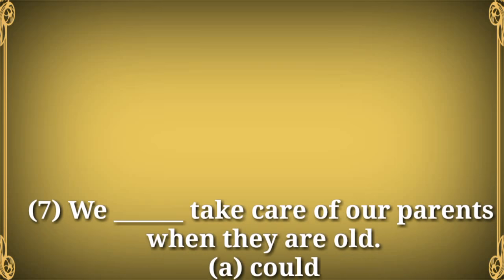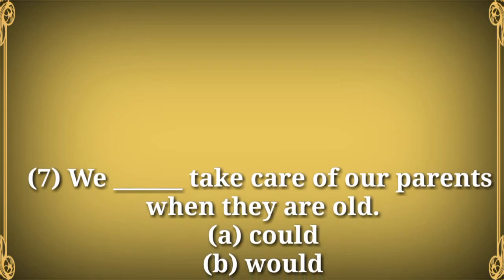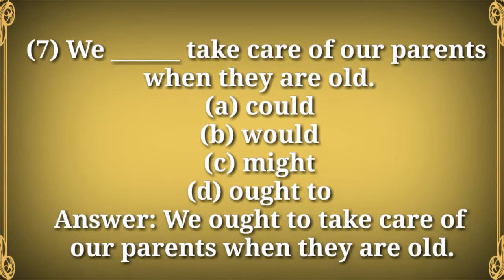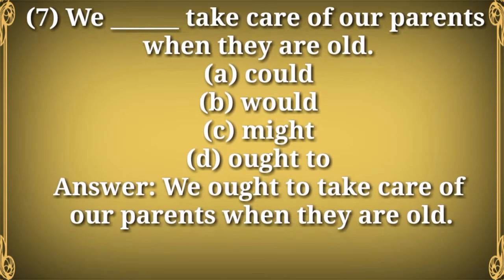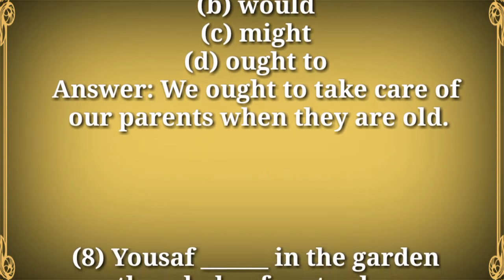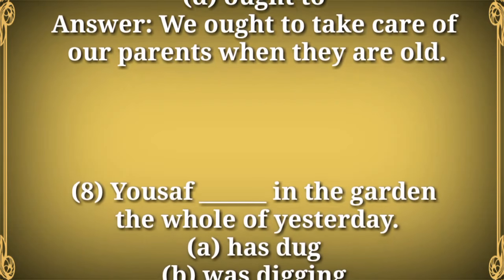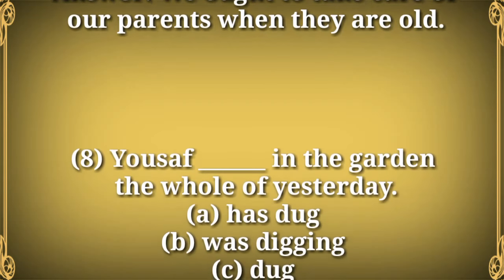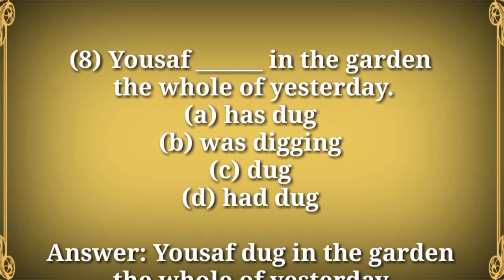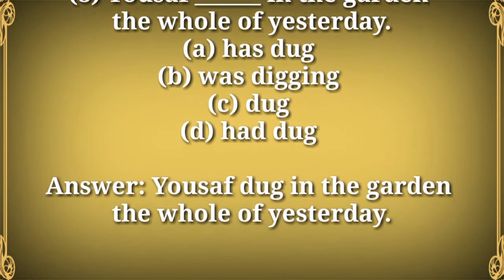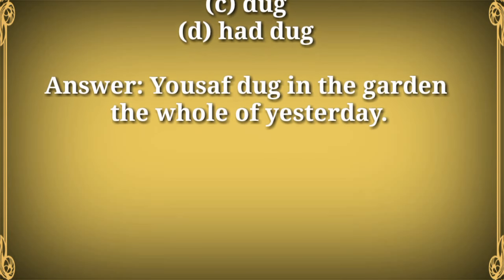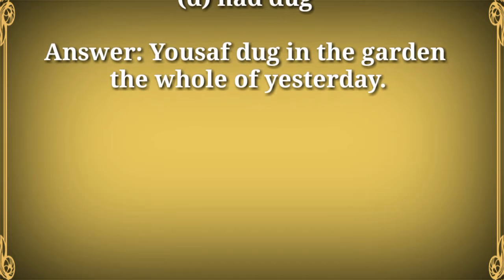Question 7: We _____ take care of our parents when they are old. Options: A) could, B) would, C) might, D) ought to. Answer: We ought to take care of our parents when they are old. Question 8: Yousaf _____ in the garden the whole of yesterday. Options: A) has dug, B) was digging, C) dug, D) had dug. Answer: Yousaf dug in the garden the whole of yesterday.